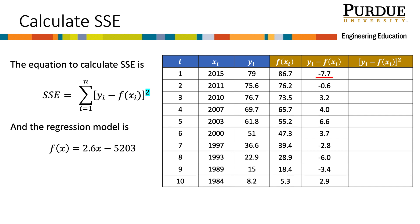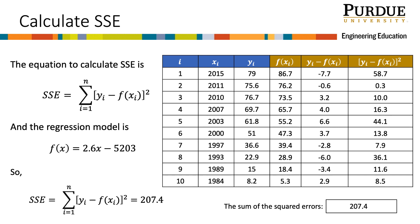Now we need to square each of the differences. So for the first line, that means squaring the negative 7.7, giving me 58.7. And again, we repeat this for all x sub i's. Finally, I need to sum all of the squares of the errors. This gives me 207.4, and this number is the SSE value, and completes this calculation.